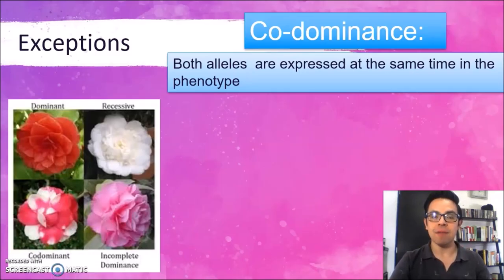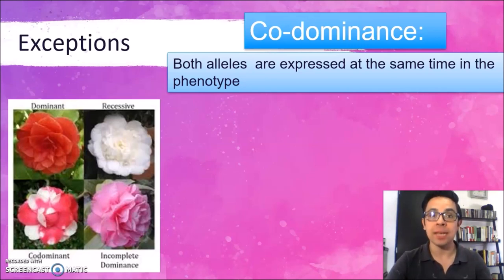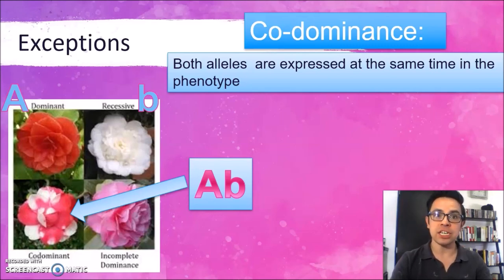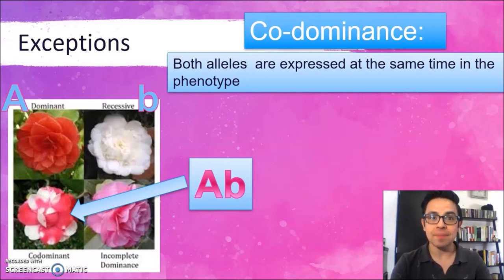Now, because biology is a science of exceptions, you need to see a couple of exceptions to this rule. If the genetic condition is said to be codominant, then both of the parents' alleles will be expressed at the same time in the phenotype of the offspring. For example, we have a dominant gene for having red flowers and a recessive gene for having white flowers. If these two organisms cross, the offspring will be heterozygous — one dominant gene and one recessive one. Normally the dominant gene will win and all the offspring will be red, but in the case of a codominant condition, both traits are going to be expressed in the phenotype. In this case, we will have spotted flowers — red and white — for the heterozygous condition.